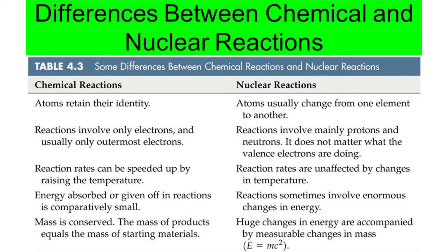In chemical reactions, atoms retain their identity — for example, if you have sodium reacting with chlorine, you will have the same elements on both the reactant and the product side. But in the case of nuclear reactions, atoms usually change from one element to another. For example, uranium undergoes nuclear reactions to produce thorium and helium, so what you have in the reactant and the product are different.